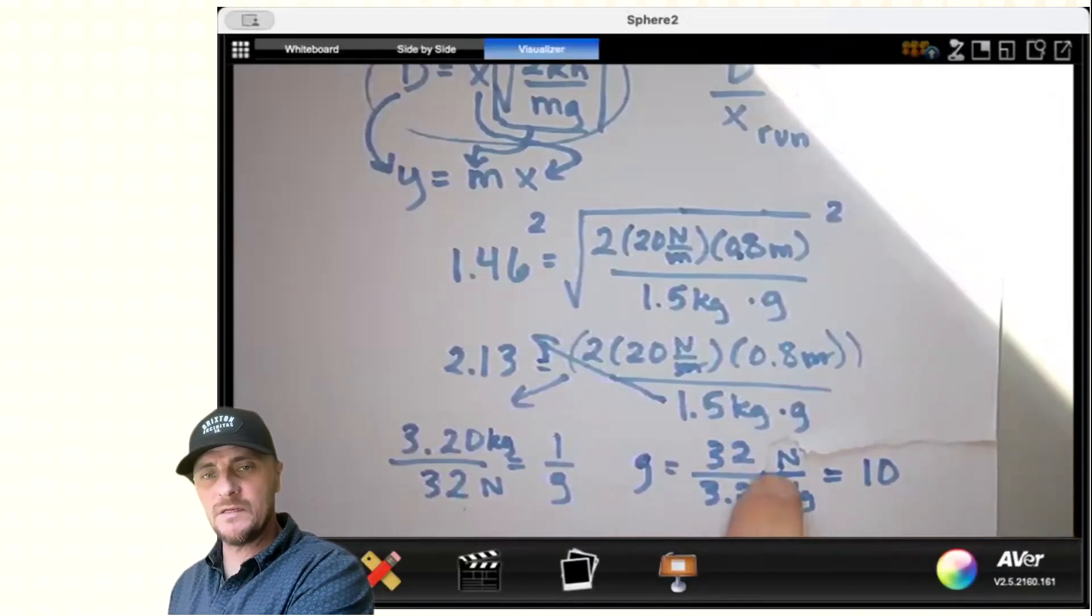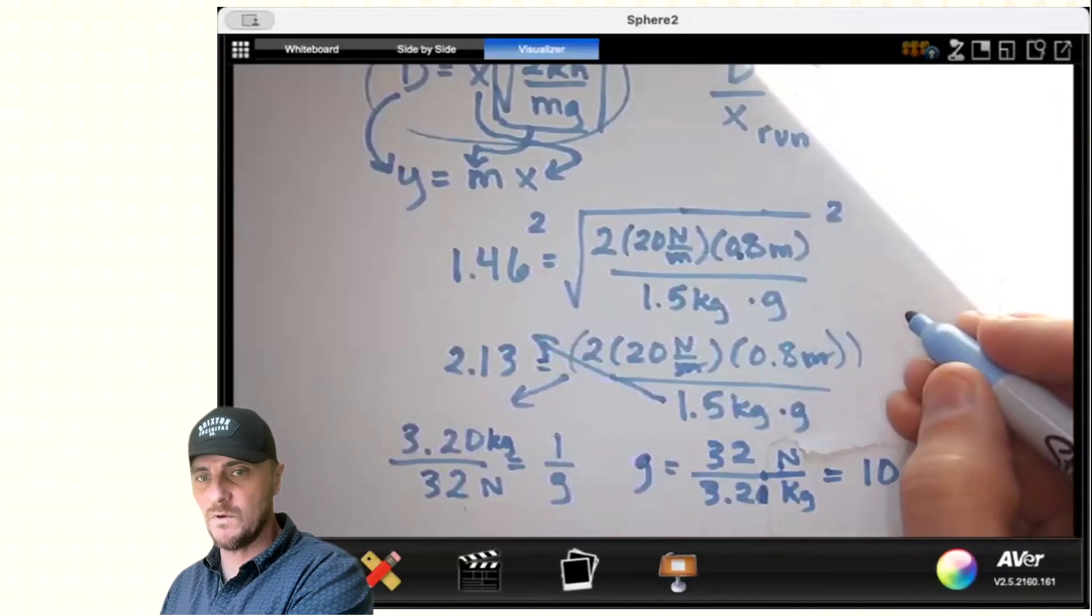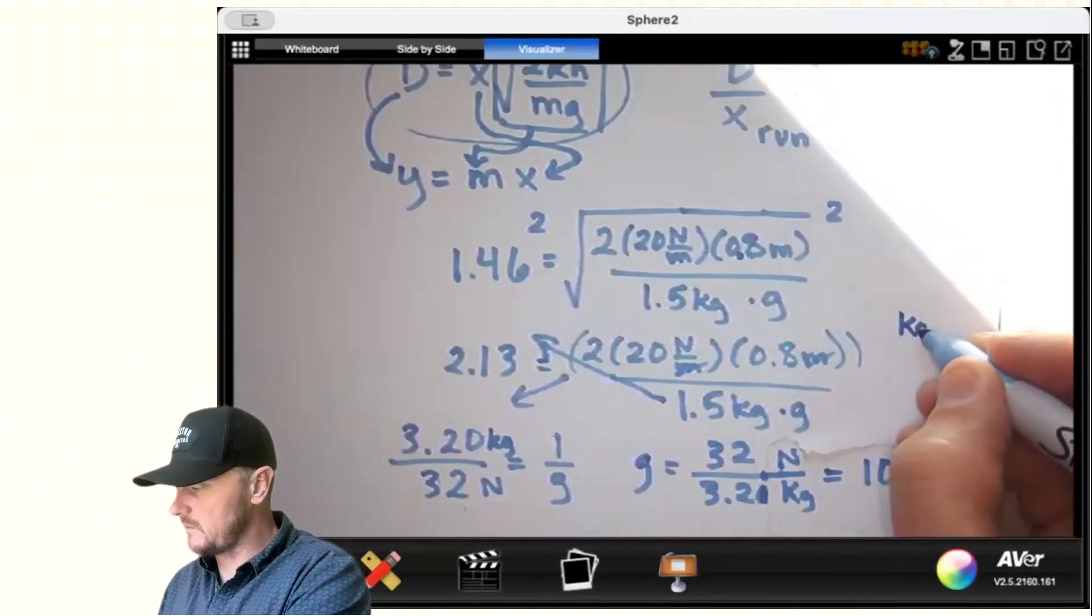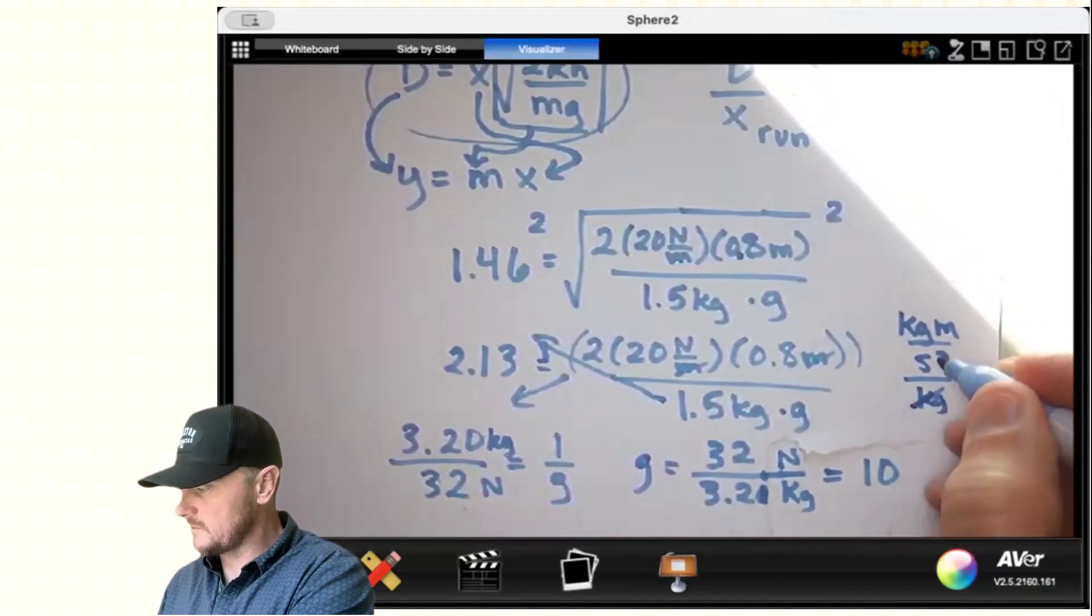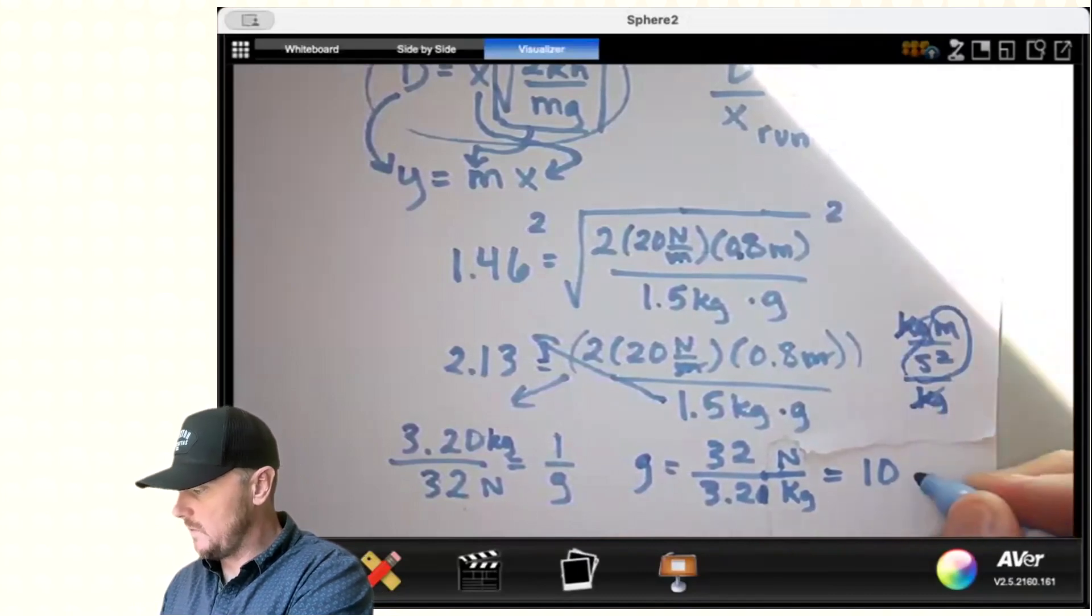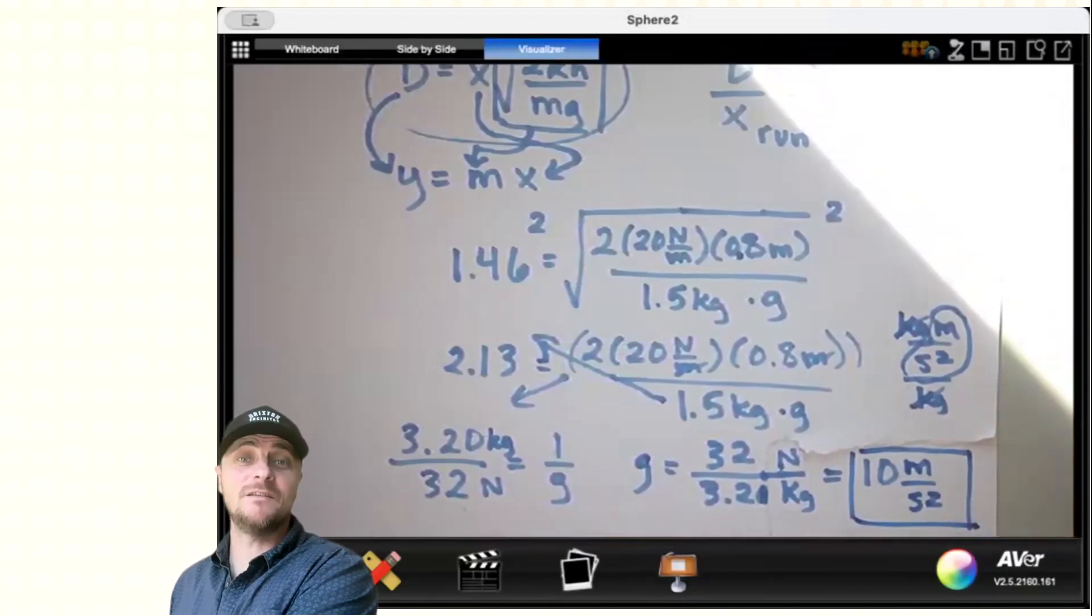Keep in mind the units are right here, and they make sense as well. Well, a newton is a kilogram meter per second squared divided by a kilogram. Those cross out, and sure enough, we get meters per second squared as our unit, and D, done.